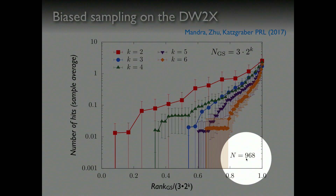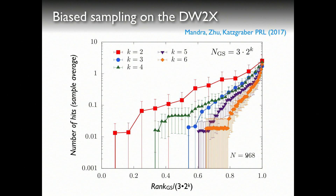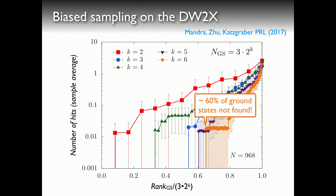We did the experiment on the D-Wave and these are the data we get — one system with 968 variables, shown for different degeneracies. The orange one looks a bit like bird poop, but the one with k equals 6, the largest degeneracy, shows nicely that there is a bias of a bit more than two orders of magnitude. Most importantly, especially in the case of the largest degeneracy, we were only able to find about a third of the minimizing configurations — the other two thirds we were never able to find.